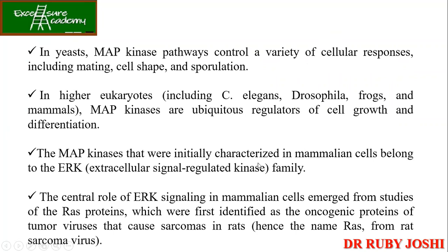MAP kinase was initially characterized in mammalian cells belonging to the ERK family — Extracellular Signal-Regulated Kinase. The central role of ERK signaling in mammalian cells emerged from studies of the RAS proteins. RAS is an oncogenic protein; if a mutation happens it is going to cause cancer.